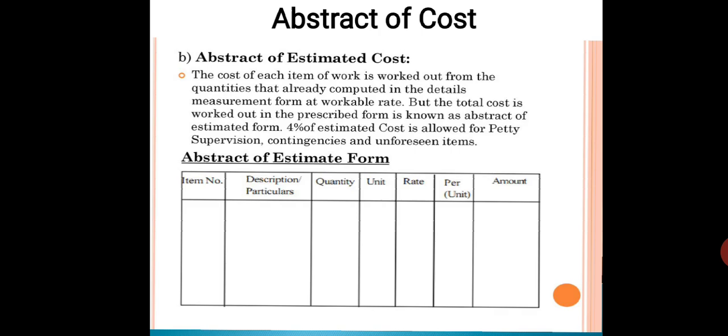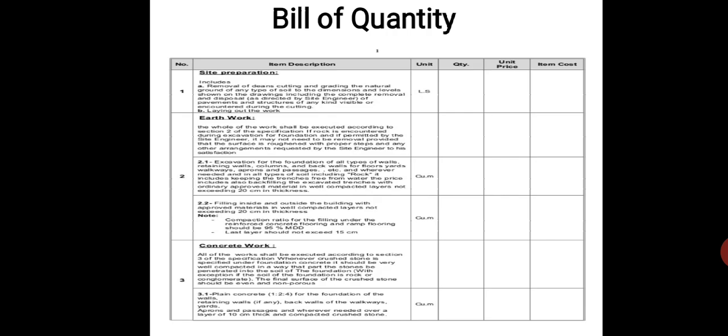The bill of quantity form contains item description, unit, quantity, price, and item cost. For example, site preparation work includes removal of trees, coatings, and grading of natural ground of any type of soil, leveling and disposal as directed by the site engineer, including removal of pavement and structures of any kind encountered during cutting.